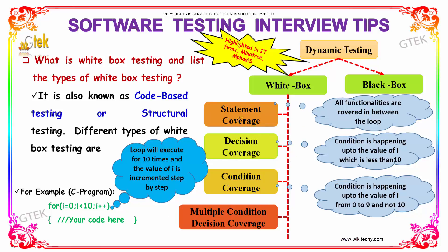Statement coverage covers all the functionalities within the loop. Decision coverage will cover the condition that is happening up to a value of 1 which is less than 10. Condition coverage is happening up to a value of 1, from 0 to 9, and not 10.